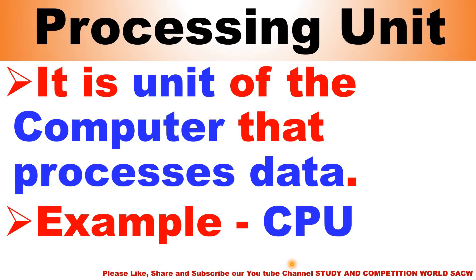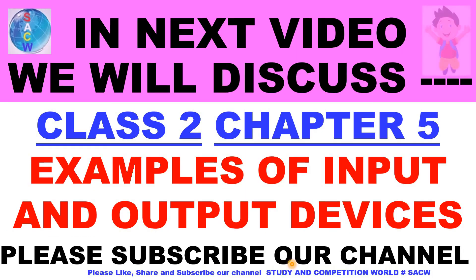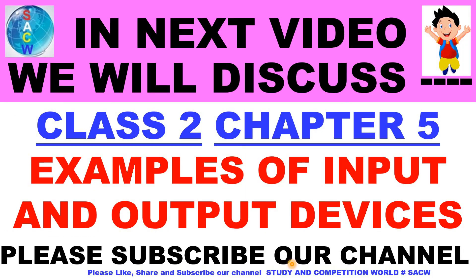Let's take a revision. Today I have discussed: what is input, what is output, examples, computer devices, input devices, output devices, processing unit, and storage devices like RAM and ROM. In the next video, we will discuss class 2nd, chapter 5: examples of input and output devices. Please subscribe to our channel.